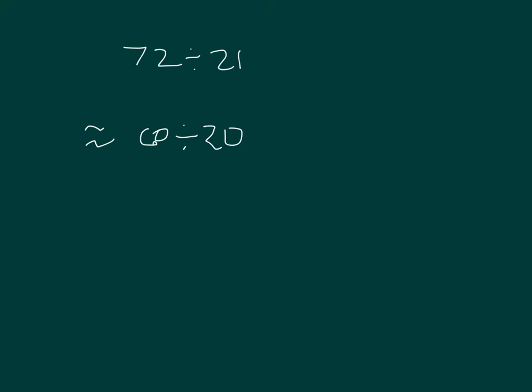Why would we not choose 80? Because 80 is a little too large. 60 divided by 20 is 3, and that will help us when we are working through this problem. So our estimate means that there are about three 21s in 72.